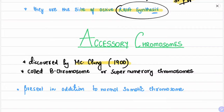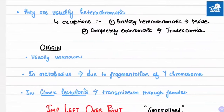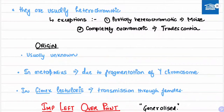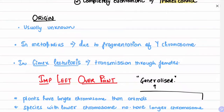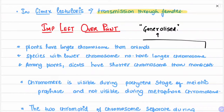Accessory chromosomes were discovered by McClung in 1900. They are also called B chromosomes or supernumerary chromosomes, present in addition to the normal somatic complement. They are usually heterochromatic, with exceptions: partially heterochromatic in maize and completely euchromatic in Tradescantia. Their origin is unknown, but in Metapodius they are formed due to fragmentation of the Y chromosome. In Cimex lectularius, they are transmitted through females.